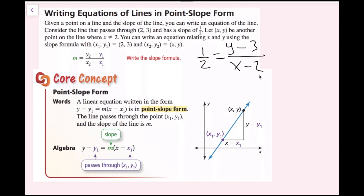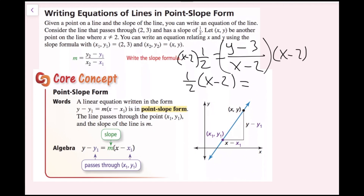One thing I can do is multiply both sides by x minus 2. When I rewrite this, I get 1/2 times (x minus 2) equals y minus 3, because those cancel out. I've used my two points — (2, 3) and (x, y) — which can be any single point on the line besides (2, 3). I've written this equation in point-slope form.